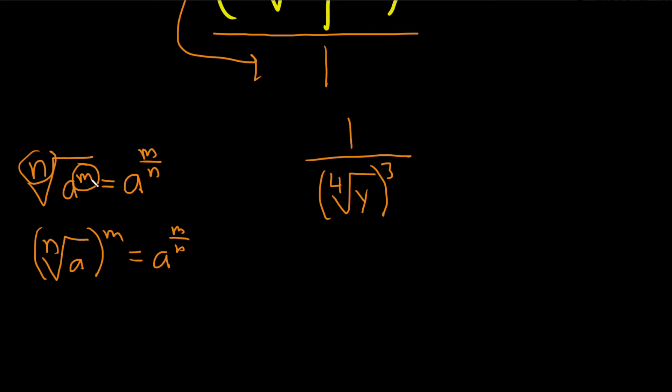So these are totally interchangeable, right? It's always this number over this number. So here it's 3 over 4, so y to the 3 over 4, and that would be the final answer.